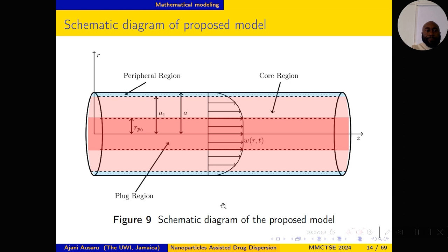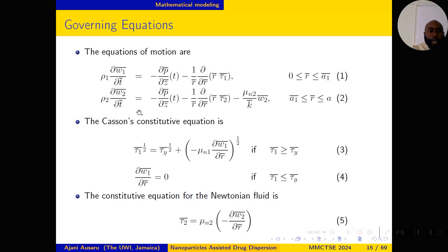Here is a schematic diagram of the proposed model. The peripheral region is seen here in blue. The radius of the tube is A. A1 is the radius of the core region which contains a non-Newtonian fluid. In the blue or peripheral region we have a Newtonian fluid, and the plug region — since we have a Casson fluid — has radius Rp.